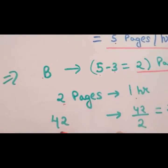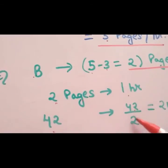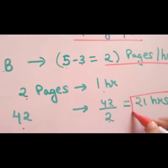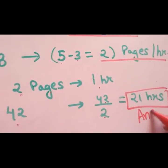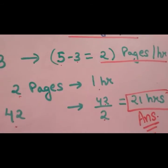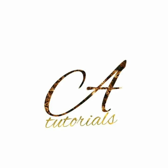2 pages in 1 hour B can write. So 42 pages B can write in 42 divided by 2. That is in 21 hours B can write 42 pages.